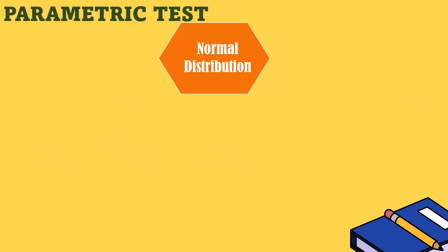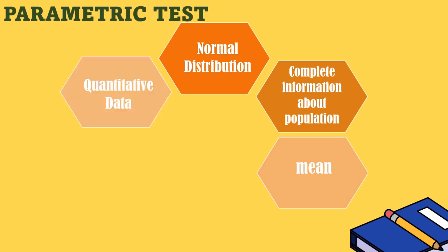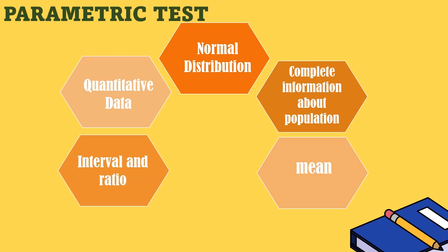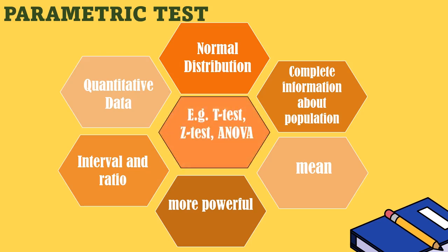In a parametric test, the data is normally distributed. This test assumes the data approximately follows a normal distribution, and there is complete information about the population. The measure of central tendency in the parametric test is the mean. It is quantitative data. Parametric tests are used for interval and ratio data, and are more powerful than non-parametric tests. Examples of parametric tests are the T-test, Z-test, and ANOVA.